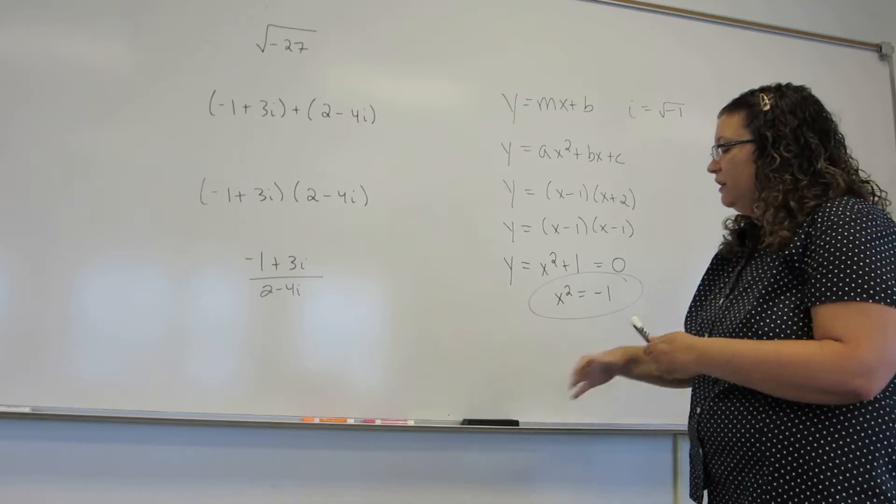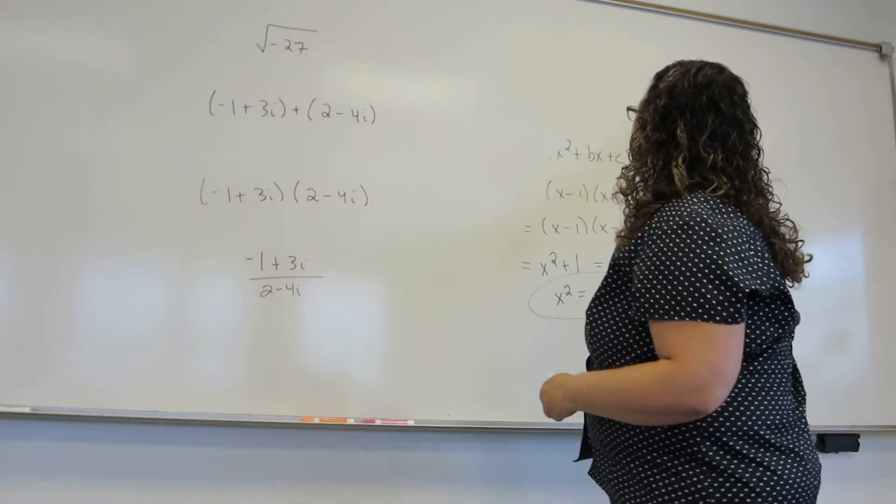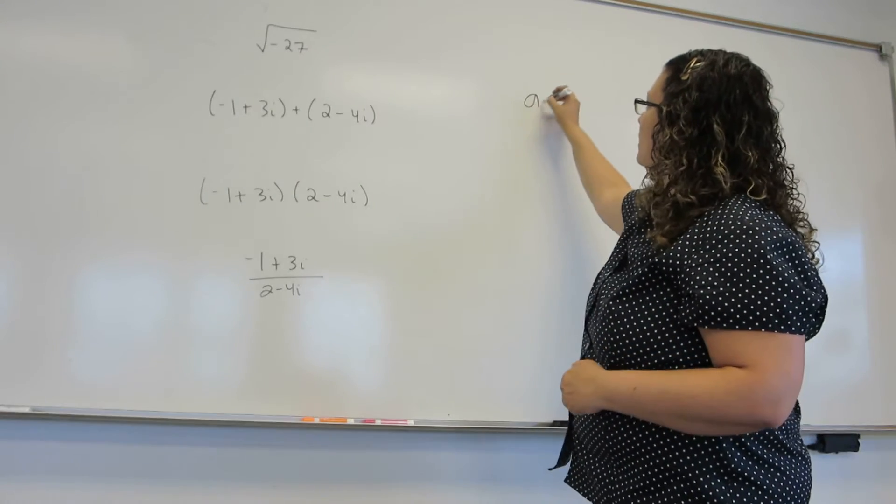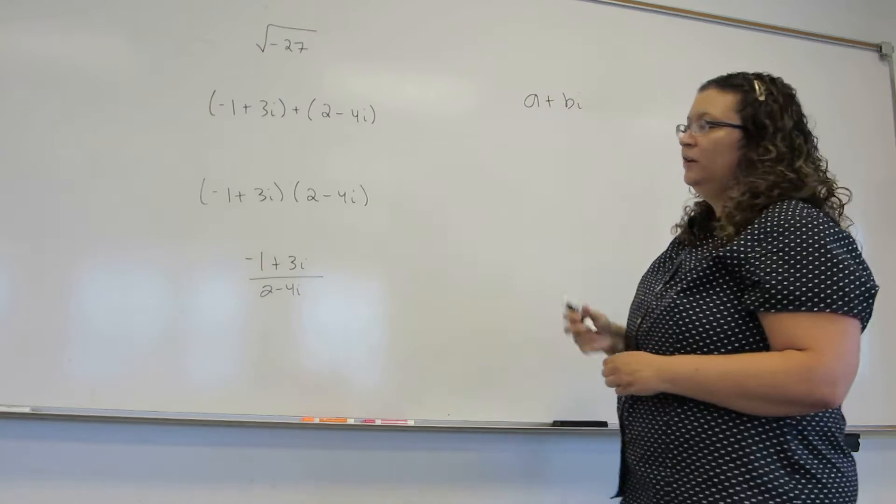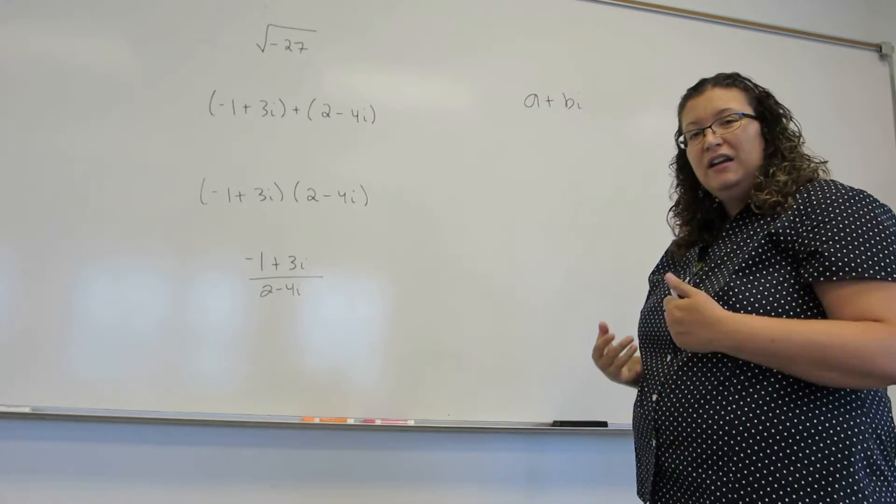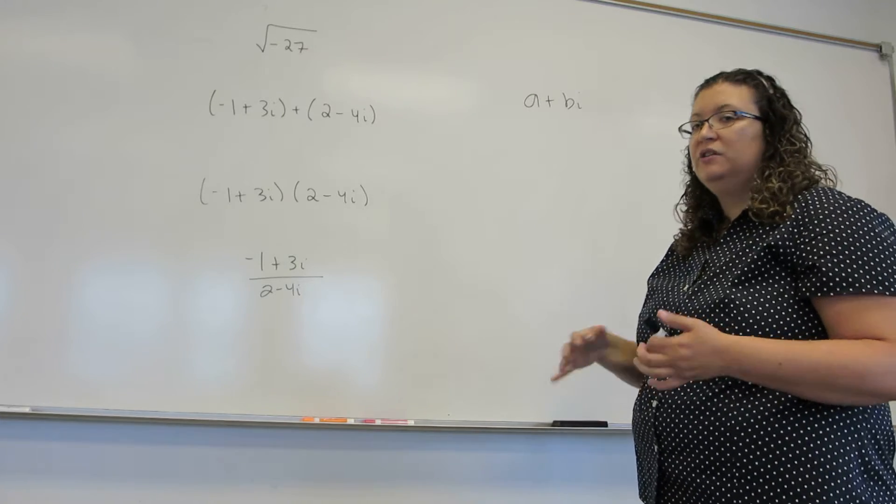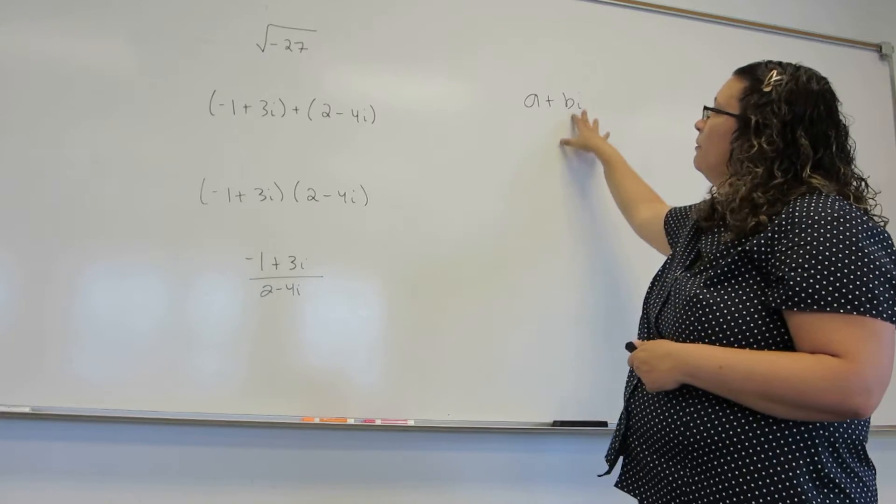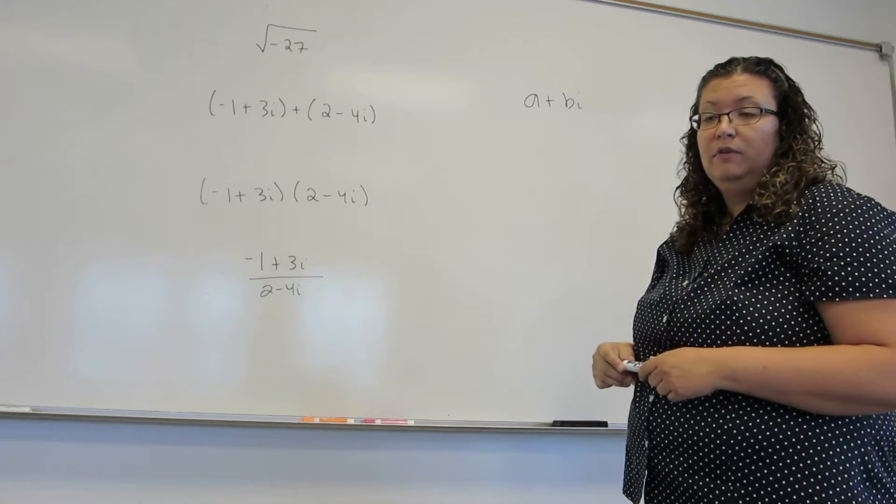Now, an imaginary number is any number that can be written as a combination a plus bi, where a and b are what we call real numbers, meaning the kind of numbers you're used to. Fractions, decimals, whole numbers, even a pi or an e. The things without an i in it.